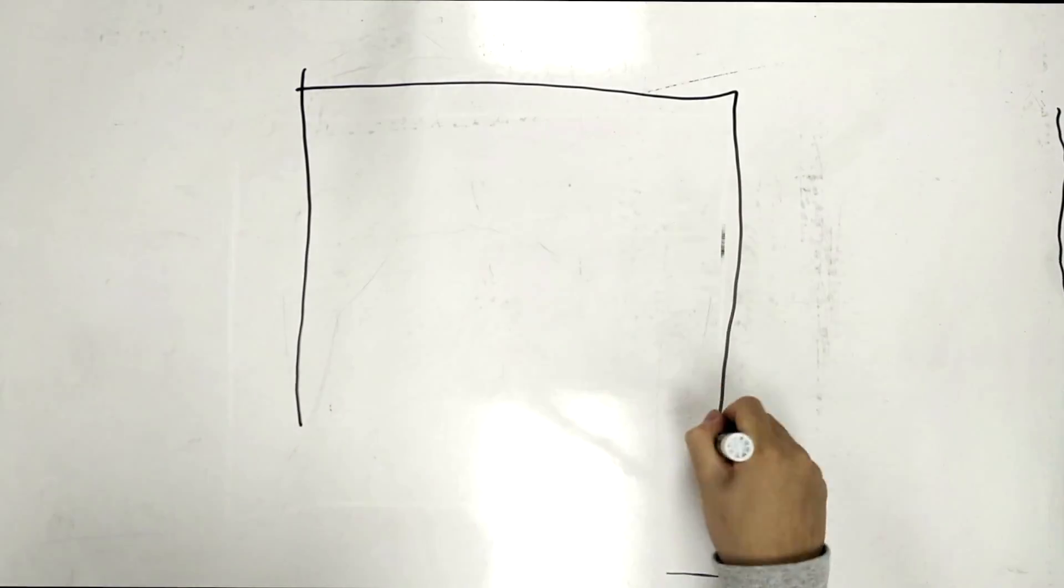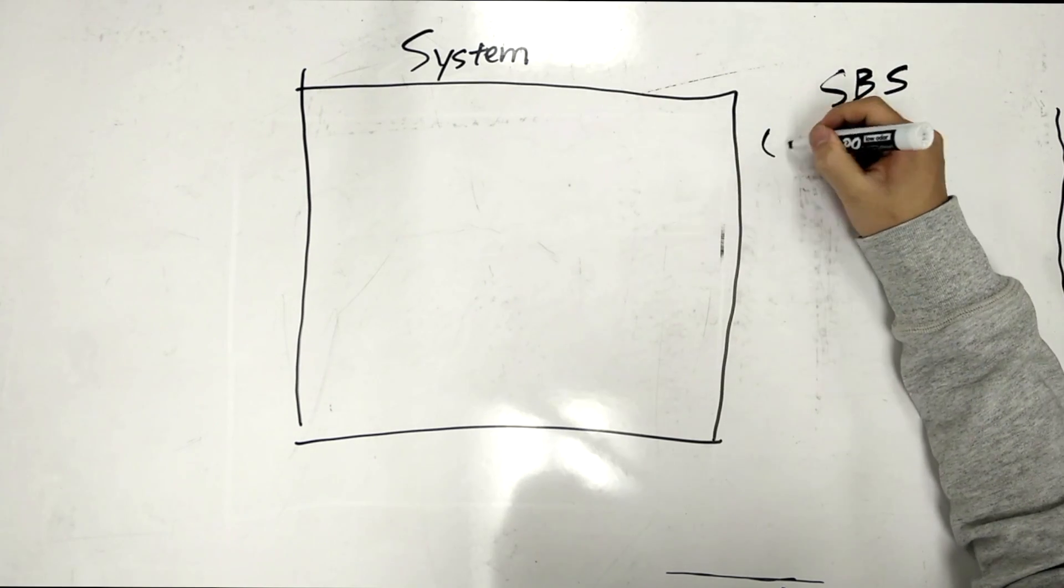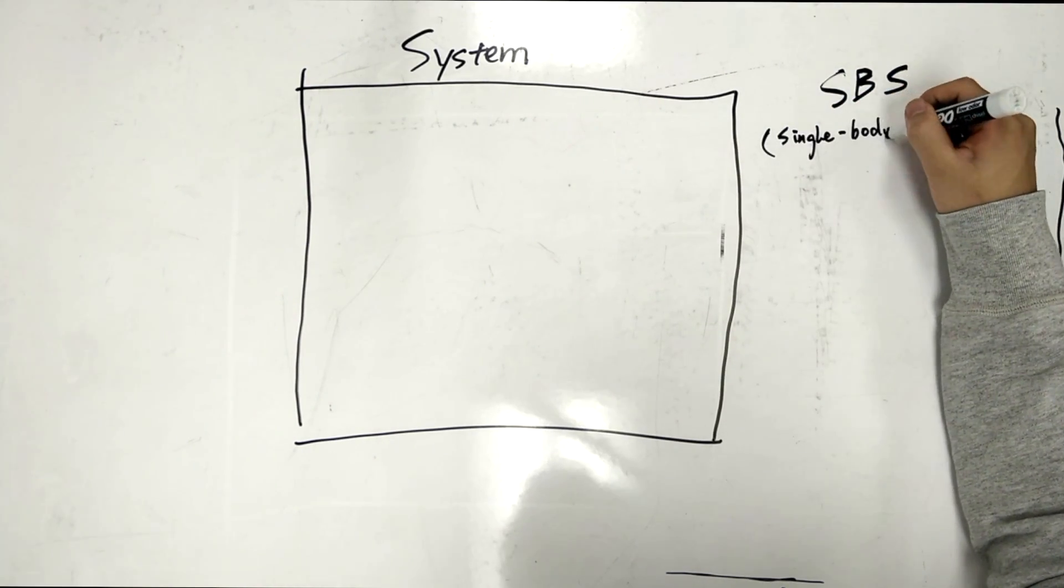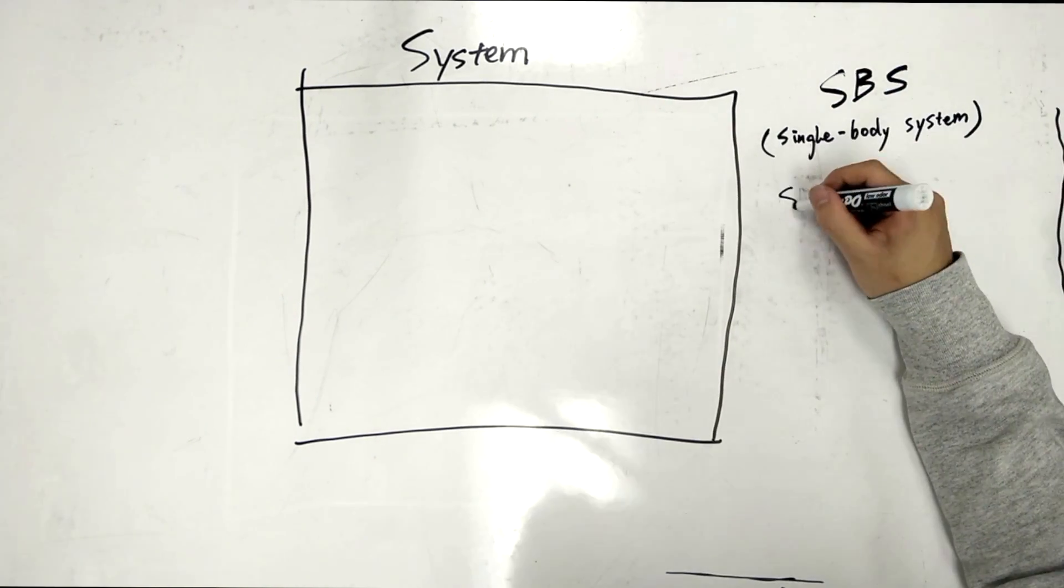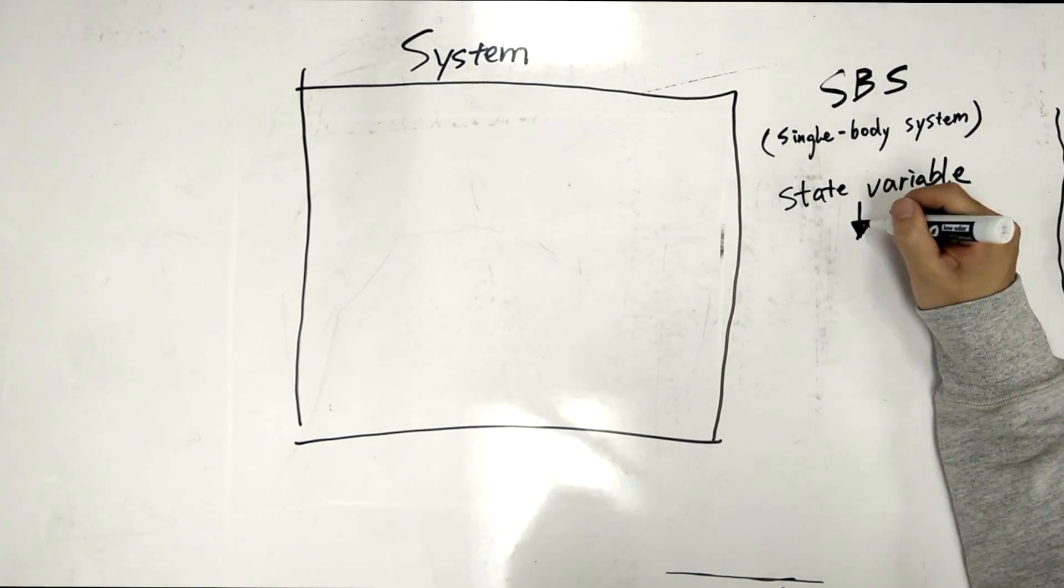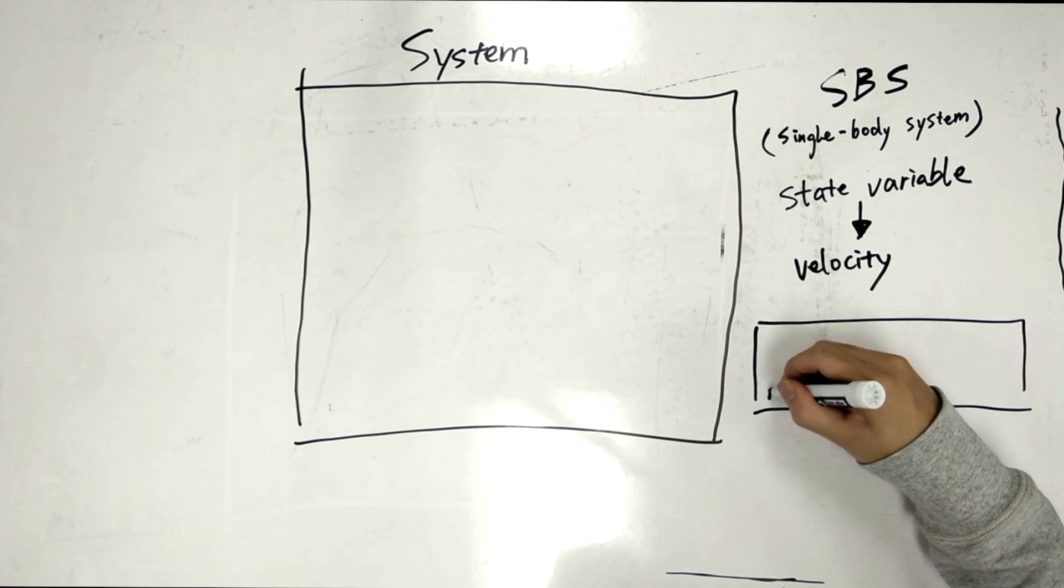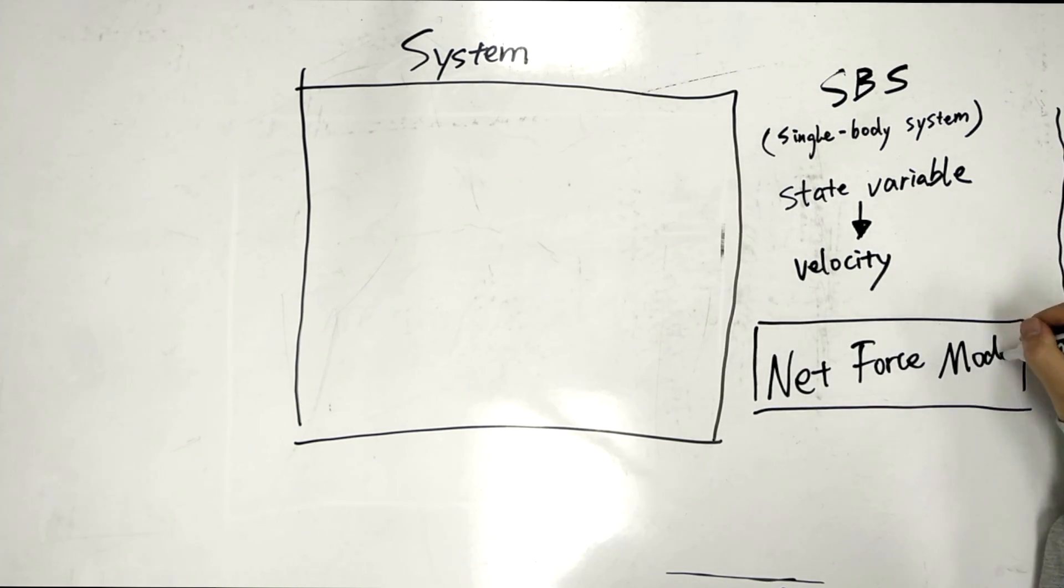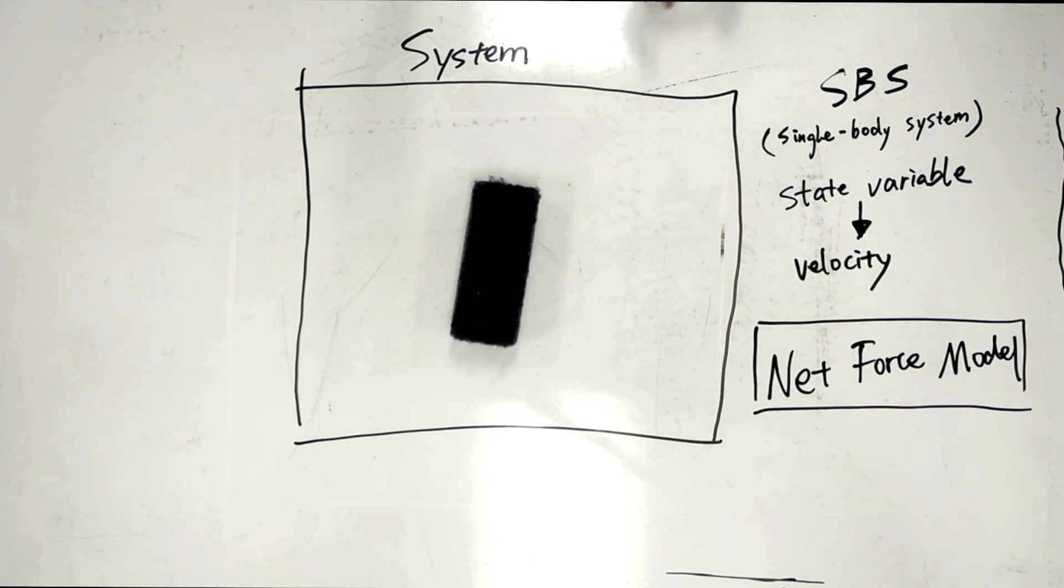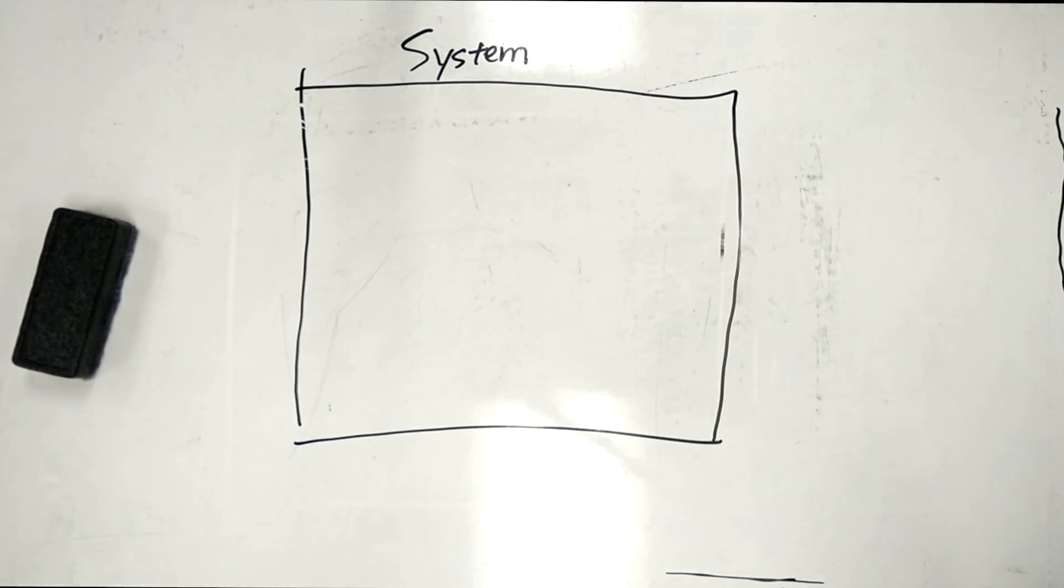Physics is the study of the motion of systems. Inside this box, we present our system. The first example will be a single-body system, and this applies to the interaction of translation. The state variable for this is velocity. And the model we use is the net force model. As you can see, this is essentially us pushing an object within a system that is influenced by external forces.